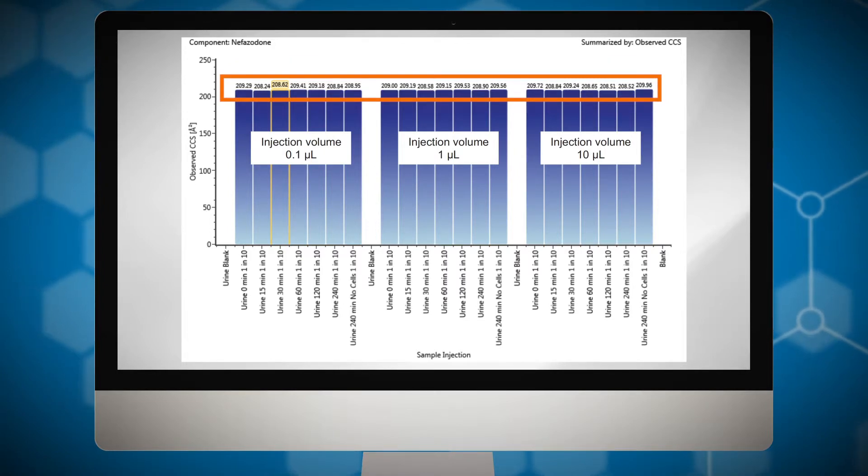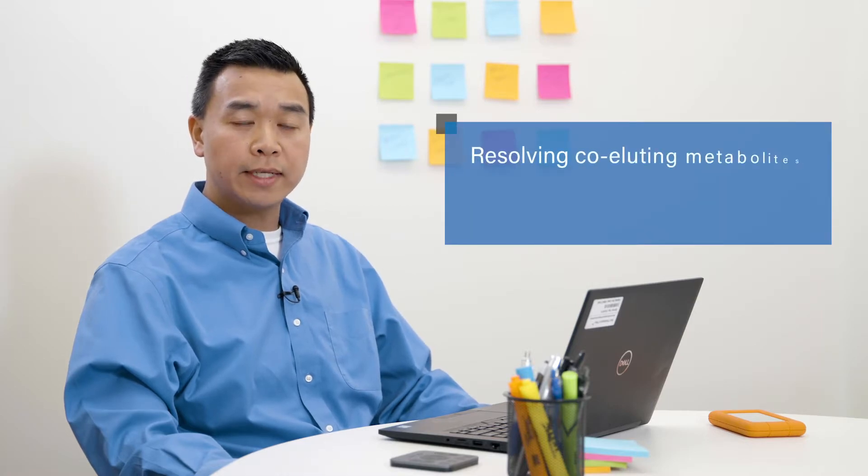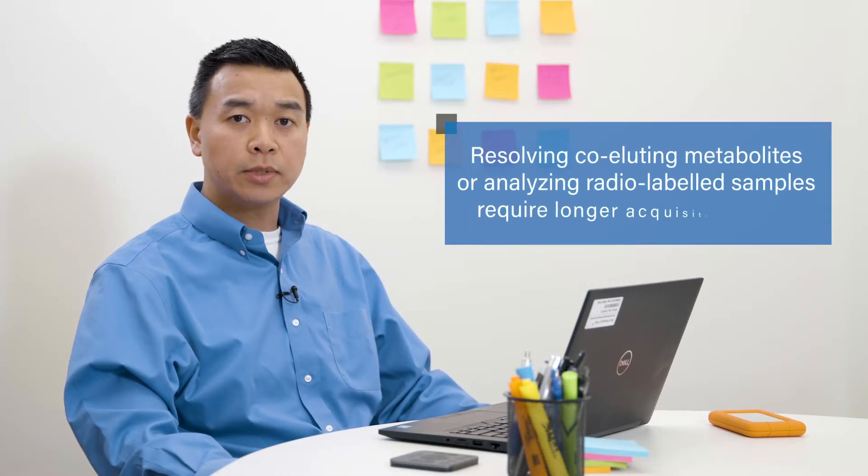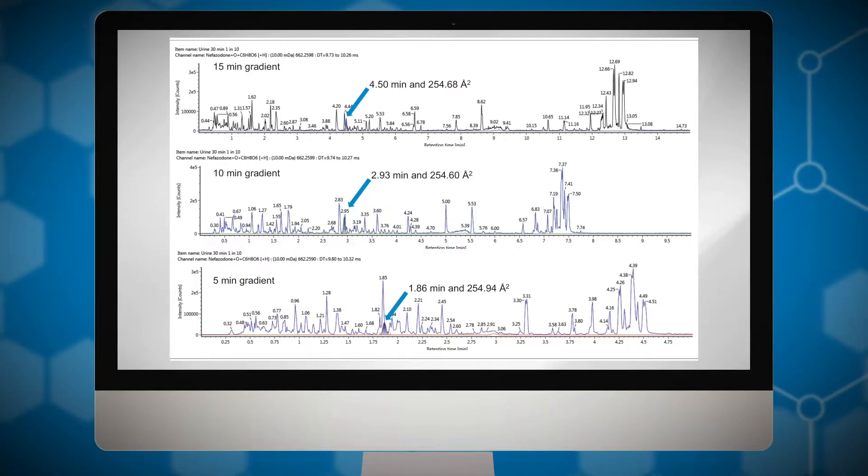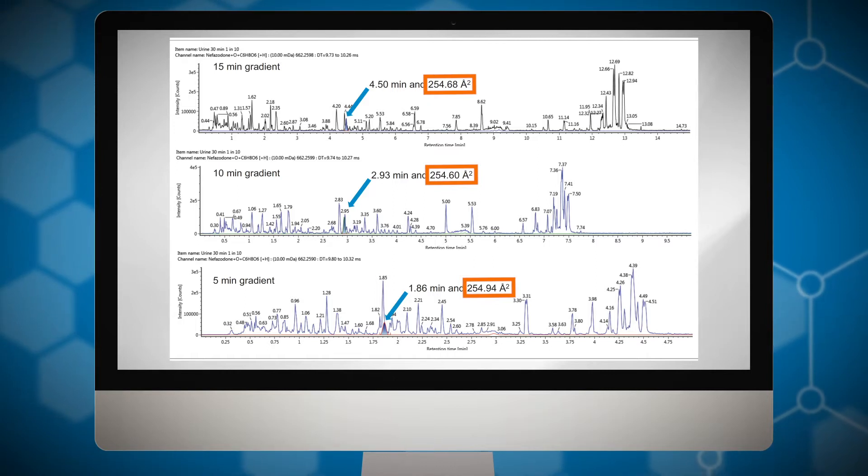Fast acquisition times are typically employed in early discovery experiments. However, resolving co-eluting metabolites or analyzing radio-labeled samples typically require longer acquisitions. Here, we can see how using the characteristic CCS value of a metabolite, together with fragmentation patterns, eases the burden of metabolite identification under those differing conditions. In this case, a hydroxylated glucuronide of nifazodone.